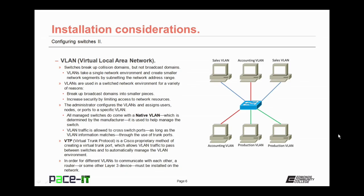VTP, or Virtual Trunk Protocol, is a Cisco proprietary method of creating a virtual trunk port, which allows VLAN traffic to pass between switches and to automatically manage the VLAN environment. In order for different VLANs to communicate with each other, a router or some other layer 3 device must be installed on the network.